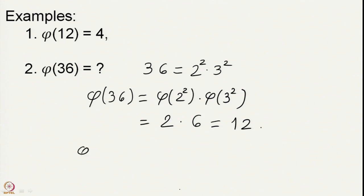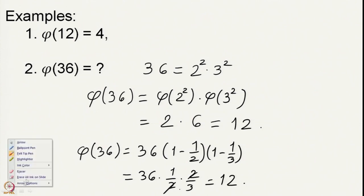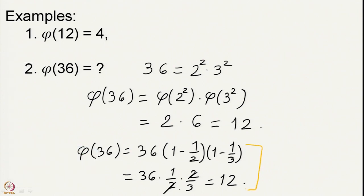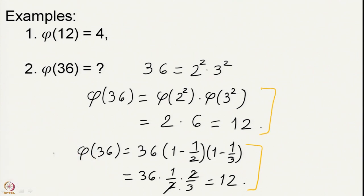So φ(36) = 2 × 6 = 12. We can also use the product formula: φ(36) = 36 × (1 − 1/2) × (1 − 1/3) = 36 × 1/2 × 2/3 = 12. So there are these two methods to compute the Euler phi function. The second method can be fed into a computer quite easily and the first one can be applied when doing the computation by hand.